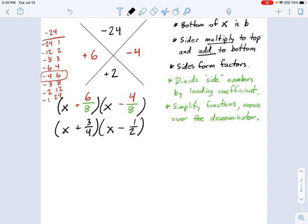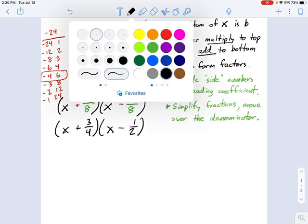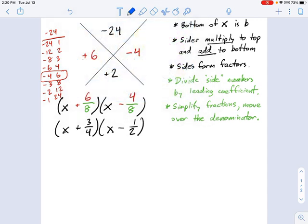Now, if those fractions simplify all the way, and it's just a whole number, great, leave it. But if it does not simplify all the way, what we do at this point is we take the denominator that's left over, and we move that in front of the X.